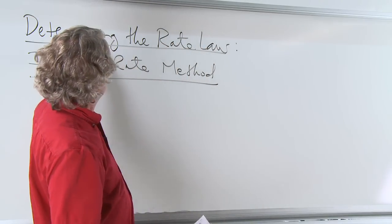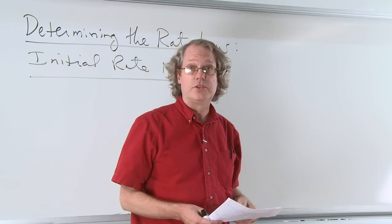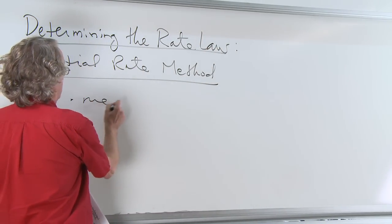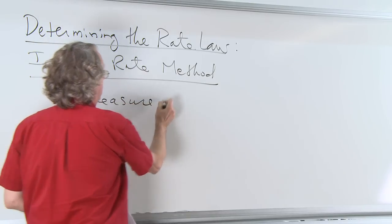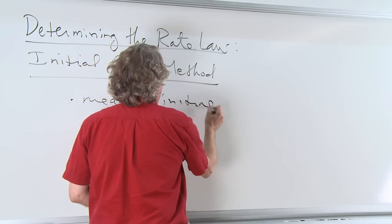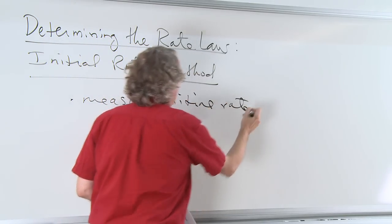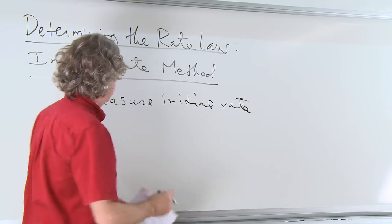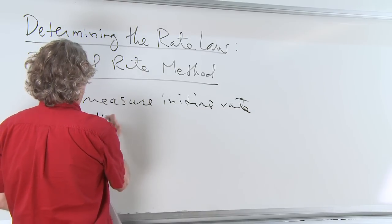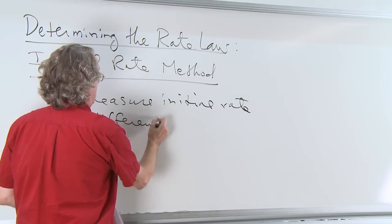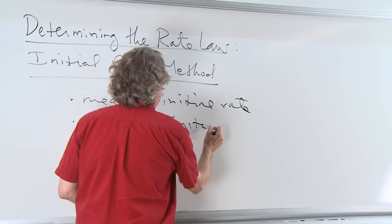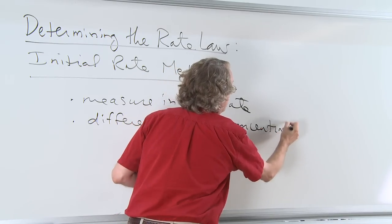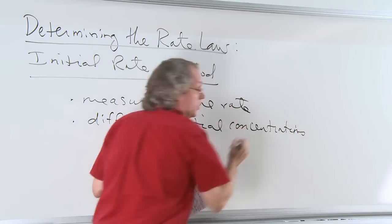Let's talk about how we can determine the rate law using the initial rate method. The idea is we're going to measure the initial rate experimentally with a variety of different initial concentrations. The simplest way to illustrate this is through an example.